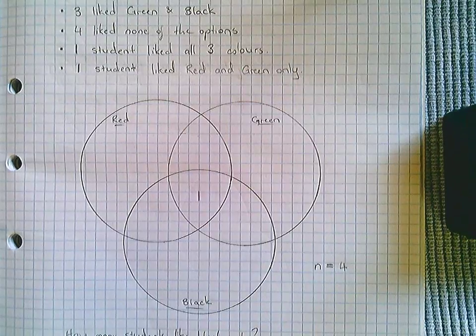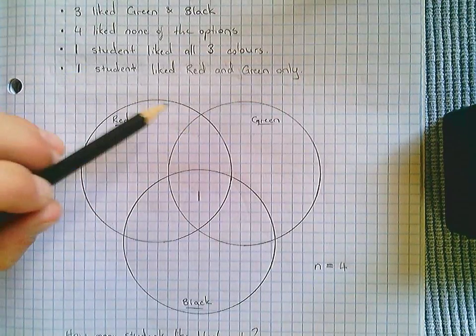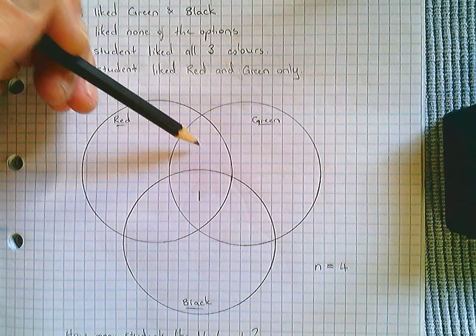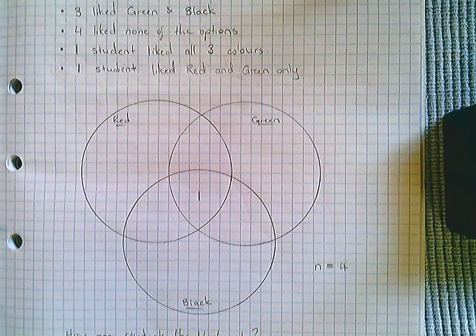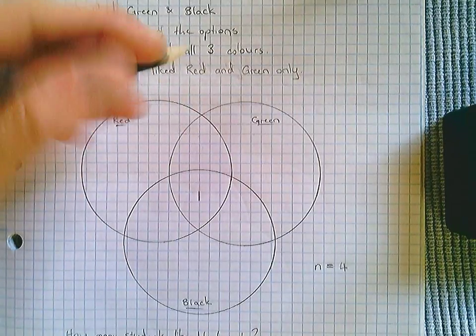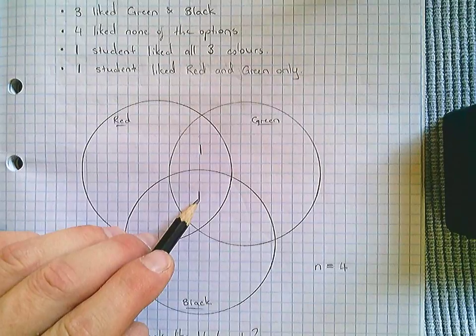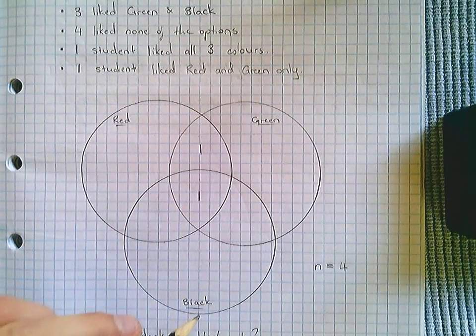What we can then do is start filling in the rest of the information. One student liked red and green only. Red and green only is represented by this box here, so we have one student which I can put in. This student here likes red and green, we're not denying that, but not only - he likes red, green and black, so we can't include him.